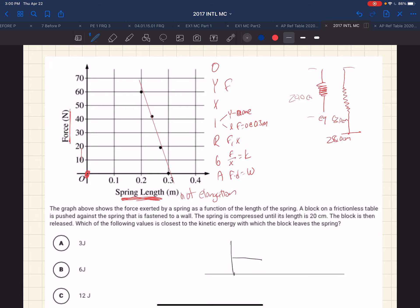So we have a spring, like so, that is fastened to a wall. So we put a block on it, and we move it from here to here, and the spring compresses.